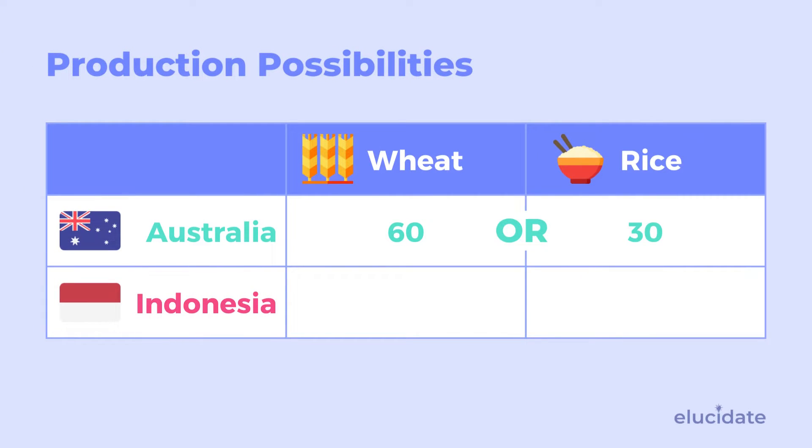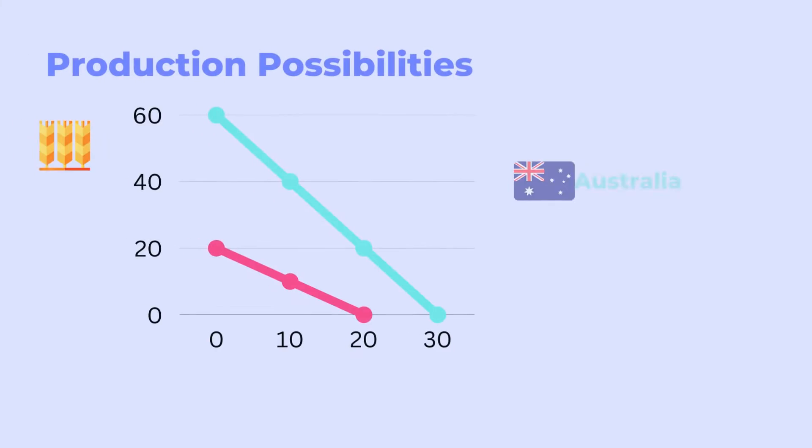Imagine a world where there are two countries, Australia and Indonesia, and they produce two products: wheat and rice. Let's assume Australia has an absolute advantage in both wheat and rice — this just means that Australia can produce more of both wheat and rice in comparison to Indonesia. Australia is four times bigger than Indonesia. In this example, Australia can produce either 60 units of wheat or 30 units of rice, and Indonesia can produce either 20 units of wheat or 20 units of rice.